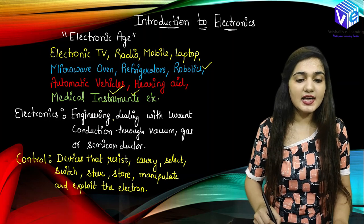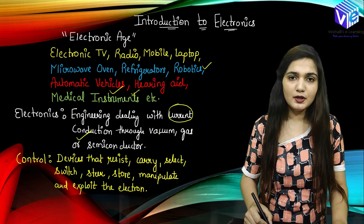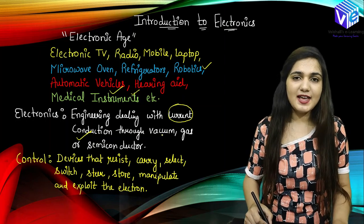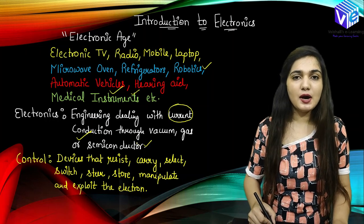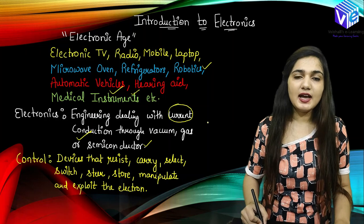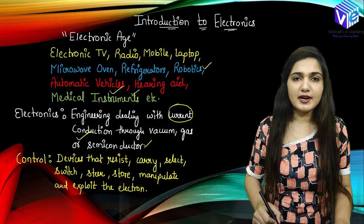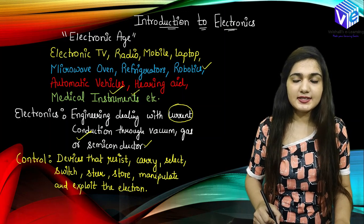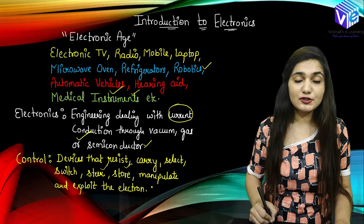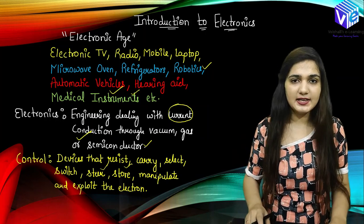So what is electronics? Electronics is the engineering which deals with current conduction through vacuum, through gas, or through semiconductors. We are going to talk in detail about semiconductors in upcoming videos. With the help of regulation of current, using some controlling devices — devices that resist, carry, select, switch, steer, store, manipulate, and exploit electrons — this is called the processing of the current. After processing of the current, we get the desired application.